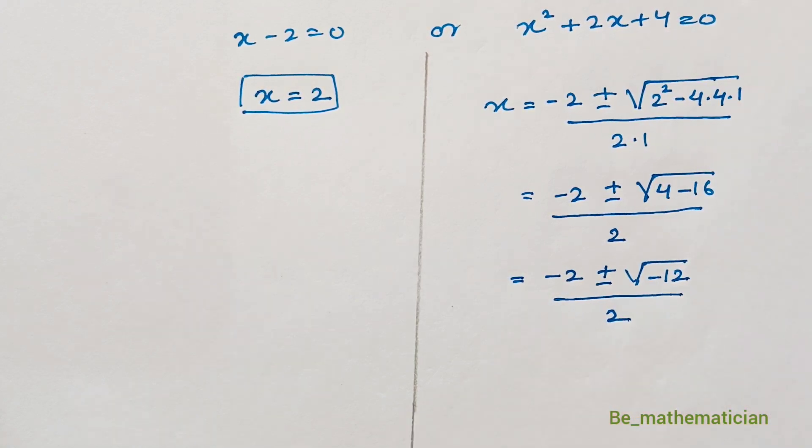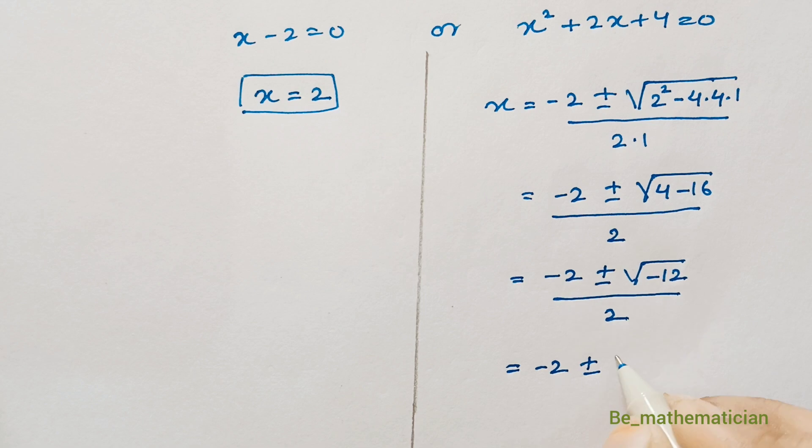In place of 12 we can write 4 into 3. So our equation will become minus 2 plus or minus under root of minus 4 into 3 divided by 2.